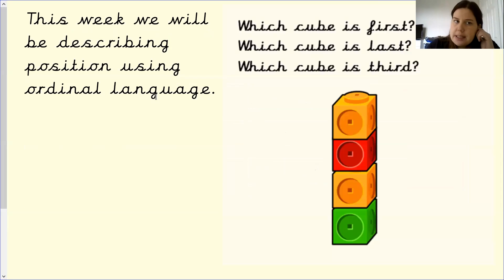So as I said, we're going to be describing position using ordinal language. So as I said, you have a block of cubes. Which cube is first? First. Which cube is last? Last. And then finally, which cube is third? Third. Third. You can solve these at home.